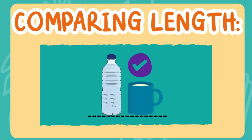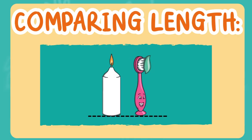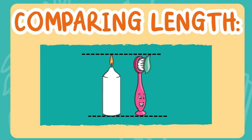Nice! All right, now let's do our last one. Which is shorter — the candle or the toothbrush? These are actually the same length. One is not taller or shorter than the other. The candle and the toothbrush are the same length. Try that with me one more time: the candle and the toothbrush are the same length.